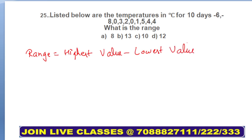What is the highest value? This is -6 and -8. Highest value you have is 5 and what is the lowest value? Which is the lowest value? Tell me: -8. So what are you getting? 5 plus 8, that means 13 degree Celsius will be your answer. This is the range, 13 degree Celsius. Highest is 5 minus lowest -8, that's why it's plus 8.